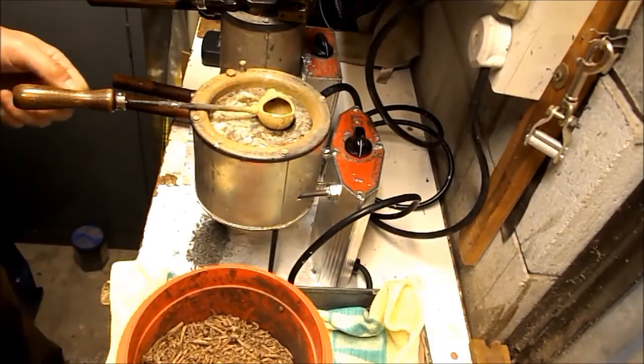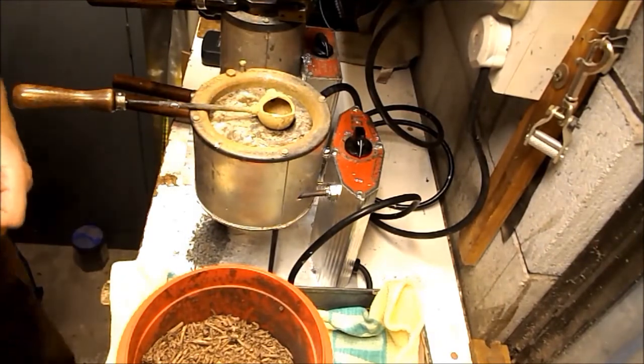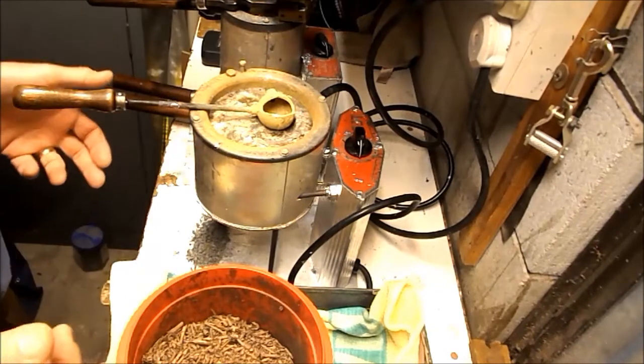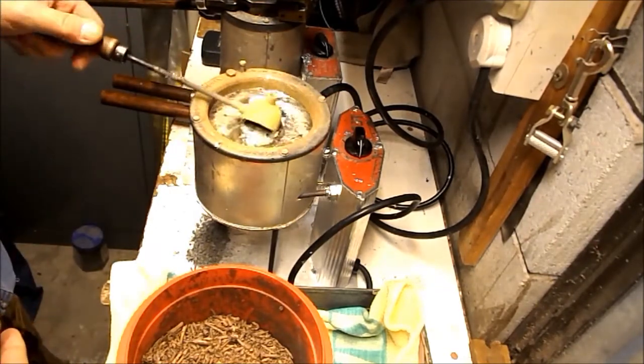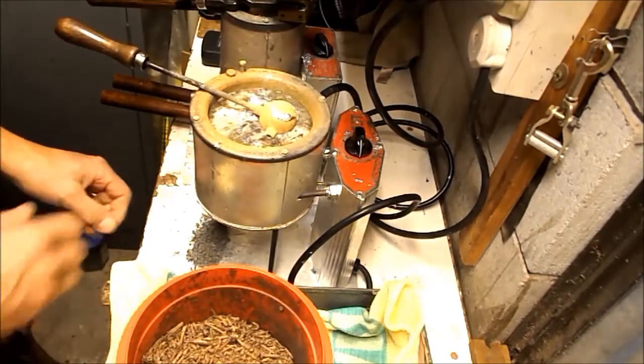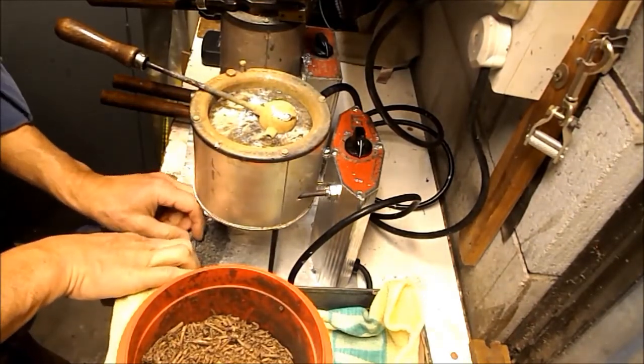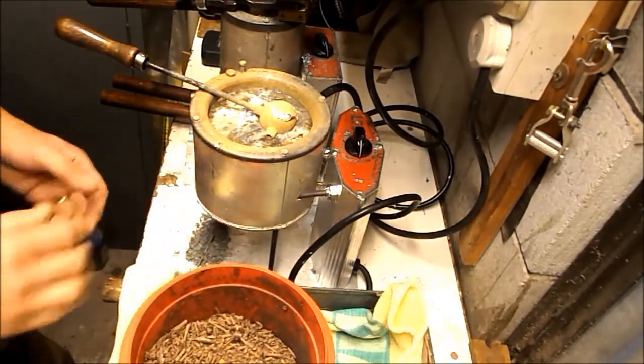Hi Jeff again for the Cast Bullet Association. I want to talk a little bit about fluxing today. The importance of fluxing your alloy is to make sure that impurities are taken out of the pot, and impurities can be anything from bits of foreign material that end up in there, like part of an old allen wrench, or just general dirt and crud.